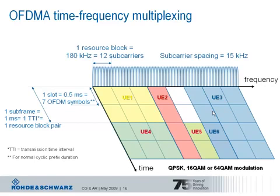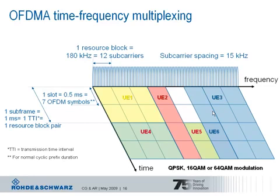The subcarrier spacing is 15 kHz, and every one millisecond these assignments can change. The time domain in LTE is organized in subframes of one millisecond each, and one subframe corresponds to a transmission time interval. Every millisecond the base station can change the scheduling decision and the distribution of resource blocks among users can change, or it can also be maintained, as in the example of UE2.